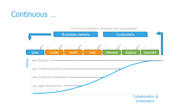Looking at the continuous value flow graph — with value on one axis and collaboration and automation on the other — we can trace a typical DevOps lifecycle: planning, coding, building, testing, release, deployment, and operate. The planning phase alone doesn't generate much value, but as we code, build, and release we create value. This is roughly where traditional agile development projects stopped. From there it was refined further with continuous integration, where checking in code triggers an automated build and test process.